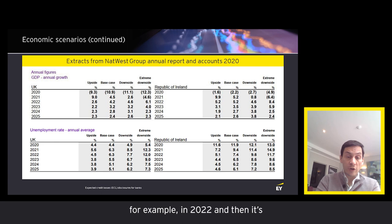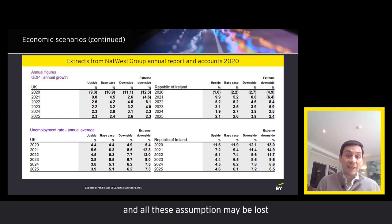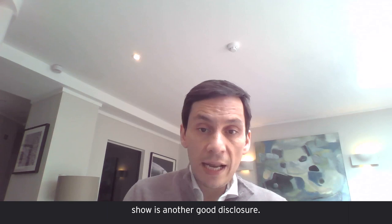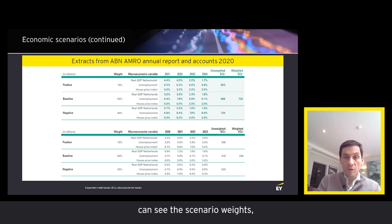GDP growth might occur in 2022 and then normalize over time. In the downside scenario, growth may be delayed to 2023 or beyond — and all these assumptions may be lost if you don't provide a good year-on-year disclosure of input values over the forecast period. Another good example from ABN AMRO touches on most of these points: you can see the scenario weights, the value of macroeconomic inputs for each year of the forecast period, and a comparison with the prior period.